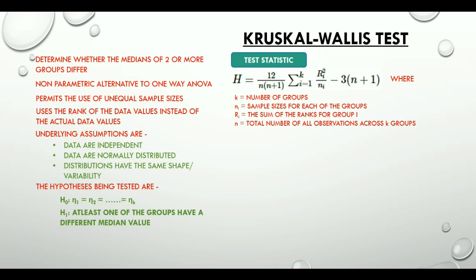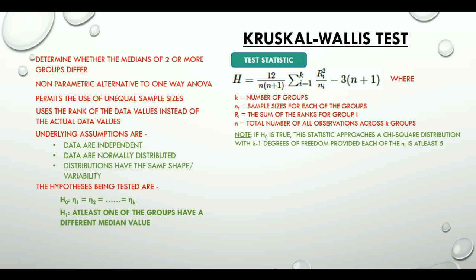It is very important to note that if the null hypothesis is true, this statistic approaches a chi-square distribution with k-1 degrees of freedom, provided each of the ni is at least 5, i.e. the sample size for each group is 5. Please do not worry about the chi-square distribution at this point because in our future videos we will talk about chi-square distribution in detail.